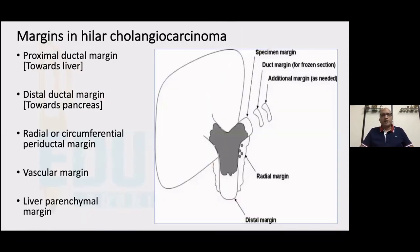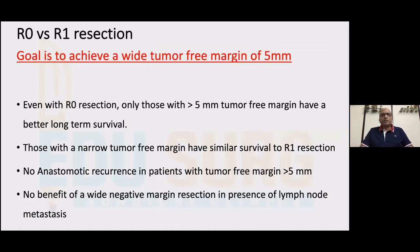Margins in hilar cholangiocarcinoma are critical — one has to look at multiple margins: the proximal ductal margin towards the liver, the distal margin towards the pancreas, the radial or circumferential or periductal margins, the vascular margin if there is vascular involvement, and the liver parenchymal margin. That is the reason we call them periductal hilar cholangios.